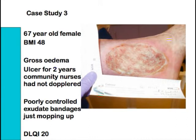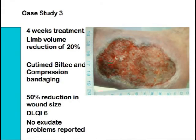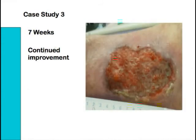Case study three: a 67-year-old female with a body mass index of 48, gross oedema, ulcer for two years. Community nurses had not dopplered this patient. Poorly controlled exudate — bandages were effectively just being used for mopping up. DLQI of 20; exudate dominated or ruled her life. After four weeks of treatment with QtMed Siltech and compression bandaging, limb volume reduced by 20%, 50% reduction in wound size, DLQI now 6, and no exudate management problems reported by the patient. At seven weeks, improvement continues.